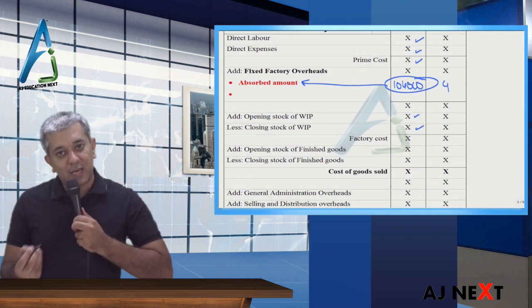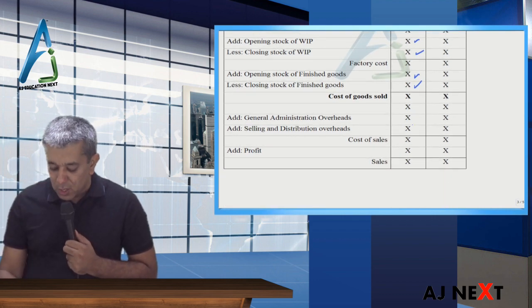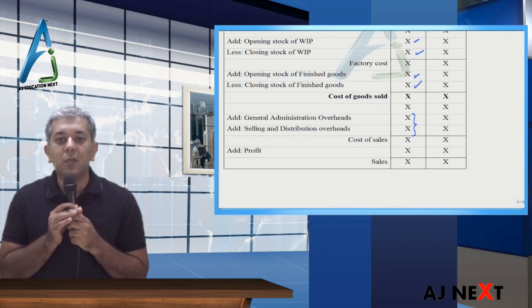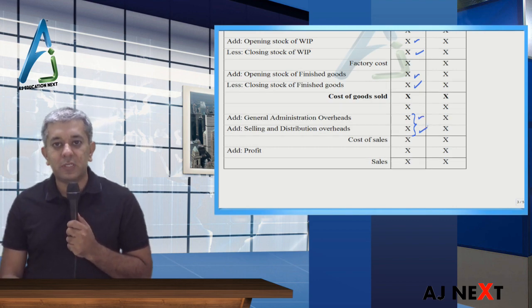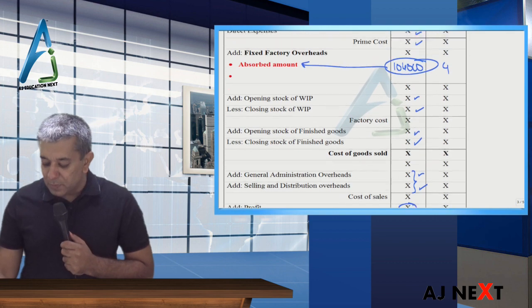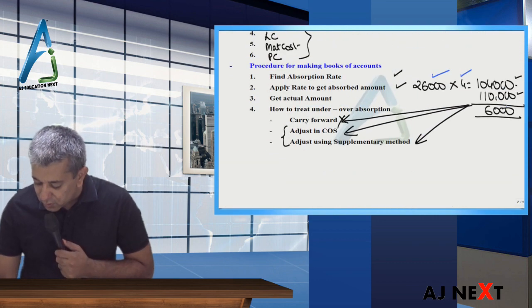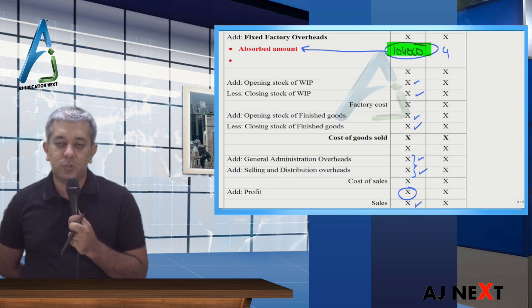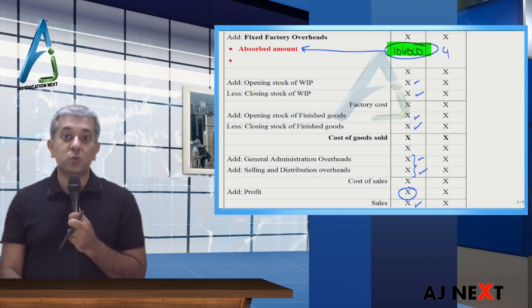Now, after that, if you have WIP stocks, then value them. After that if you have finished goods stock, then value them. COGS will be received. After that admin and selling & distribution, remember, absorption costing does not apply to them. Why? Because they are not dependent upon production. So their actual amount is always written. Sales actual amount is also written. So you get this profit. Okay? So listen. But this profit is till the time here, which amount is there? Absorbed amount.